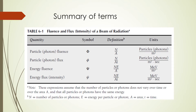The table on this slide shows a summary of the terms defined on the previous slide. Fluence is shown as n divided by A. Flux is n divided by A times T. Energy fluence is just the fluence multiplied by the energy. And energy flux is just the flux multiplied by energy. The units of each of these terms is shown here.